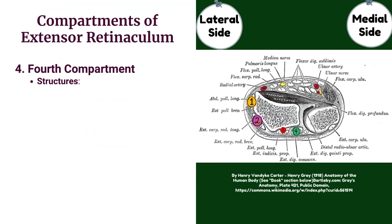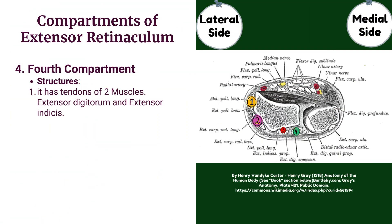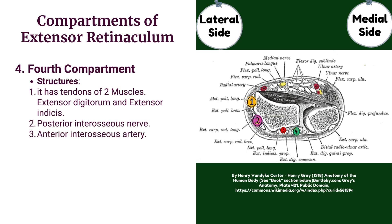The fourth compartment contains the tendons of two muscles: extensor digitorum and extensor indicis, as well as the posterior interosseous nerve and the anterior interosseous artery.